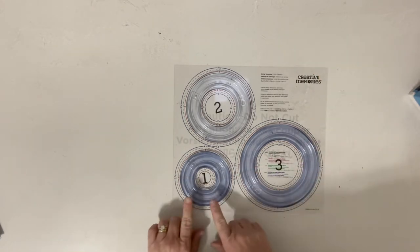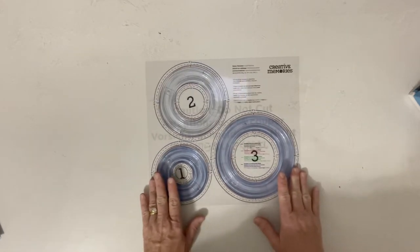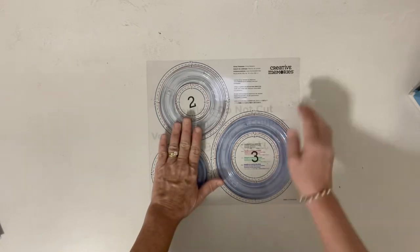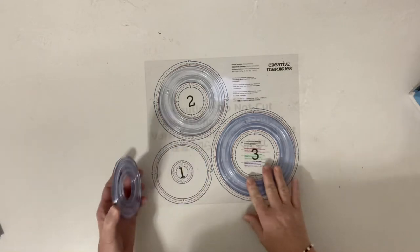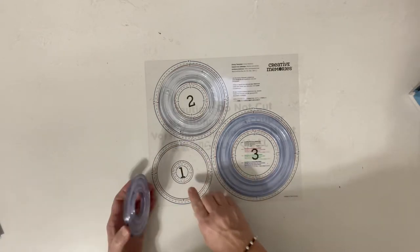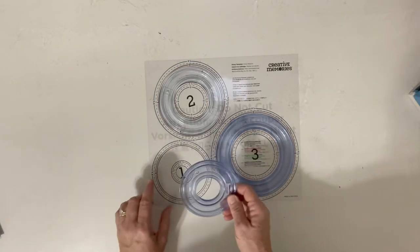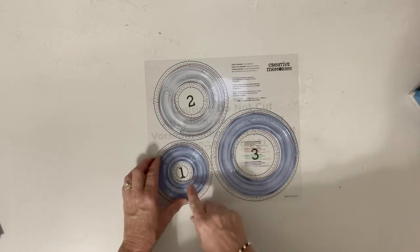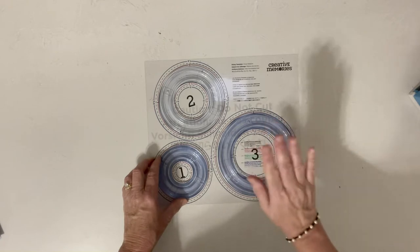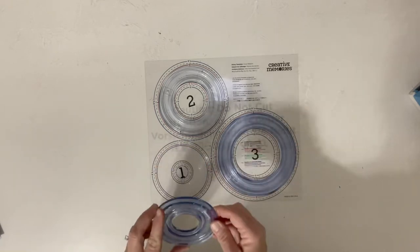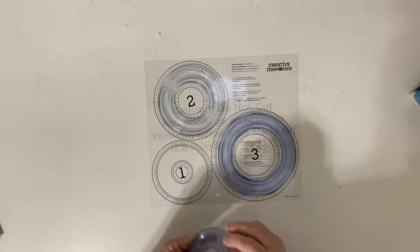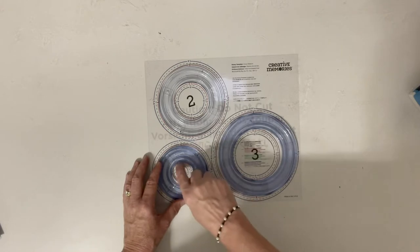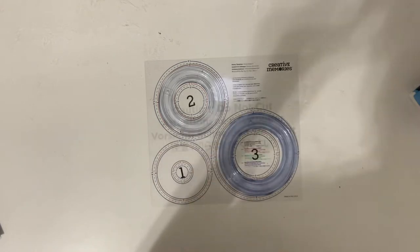So this circle, the way this works, the circles match up with the template here and the outside line and the inside line match up with the black lines on the templates. So you're going to hear me call these templates and these templates. This circle has a number one on it and this has a number one and that means the black lines on the outside and the inside match this.